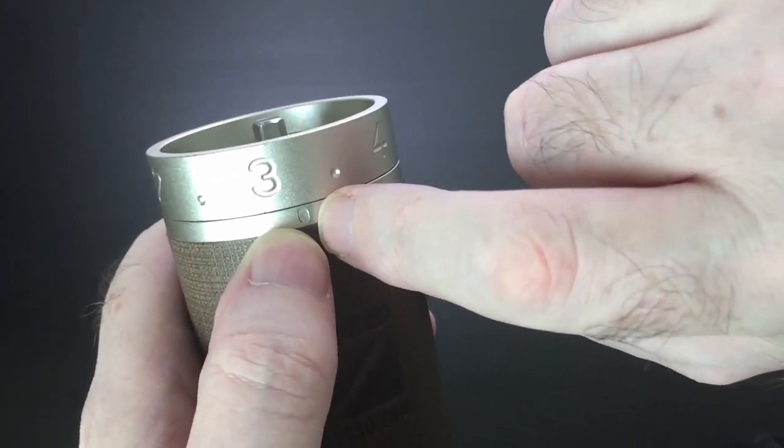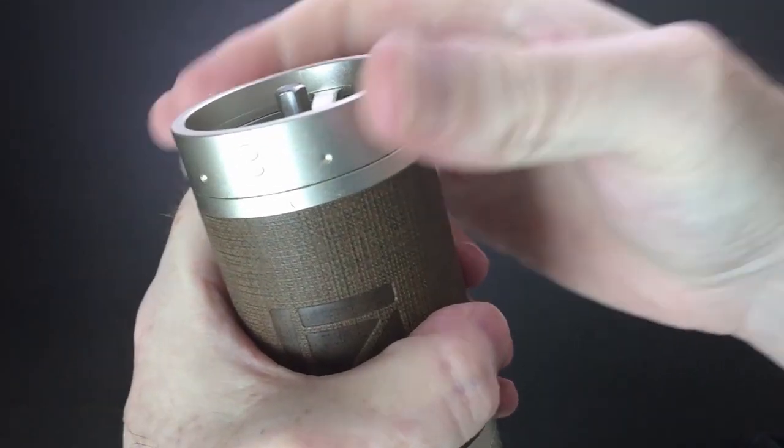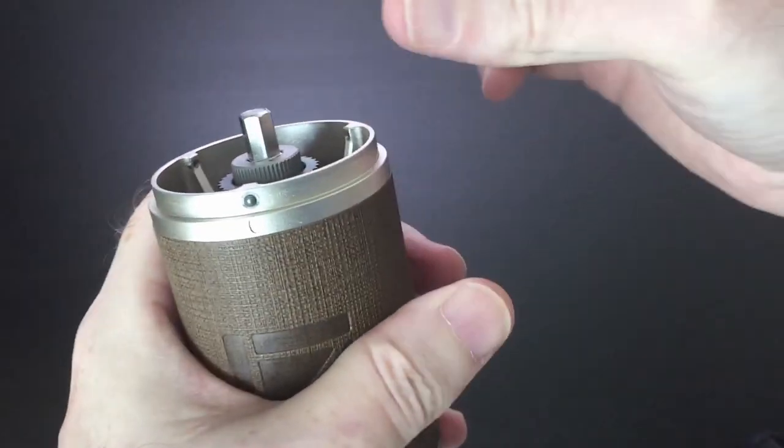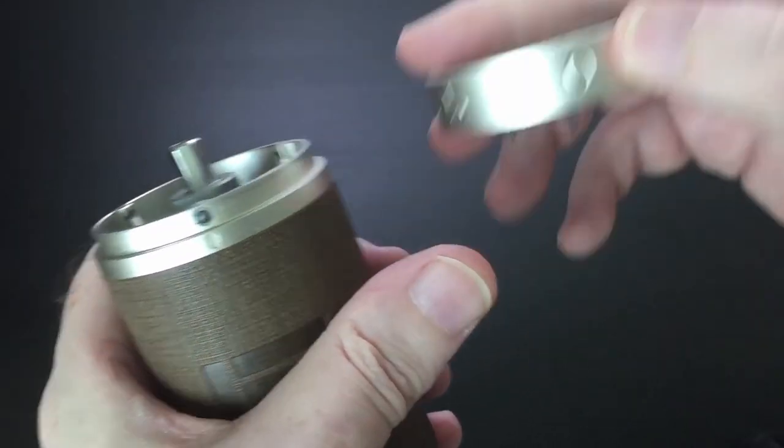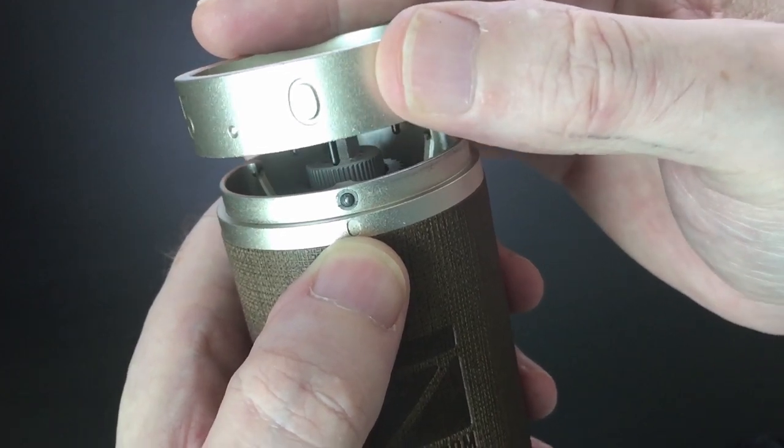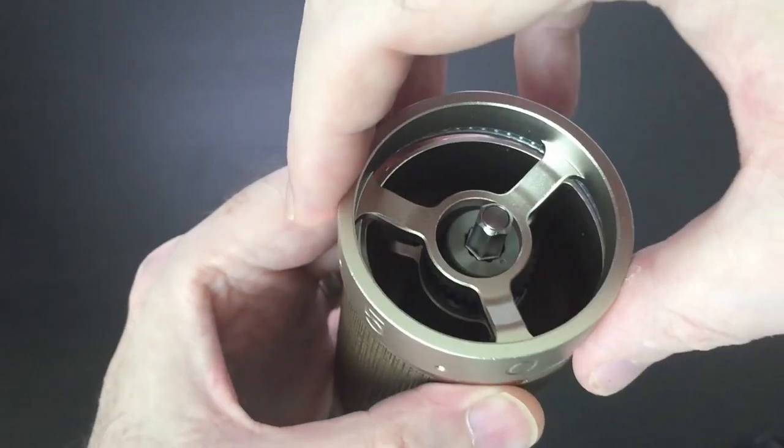Just pop off your adjustment dial again like so and find the zero number. There. You want this to line up with that. At that point, just put it back into place.